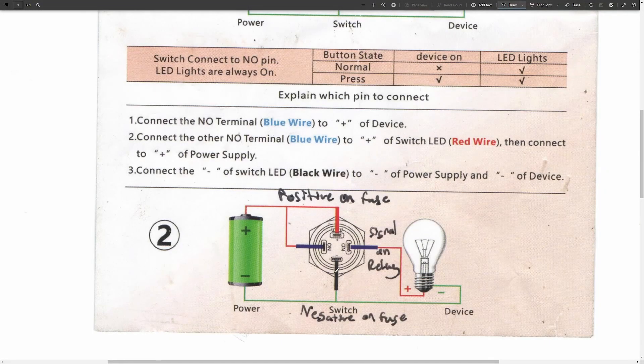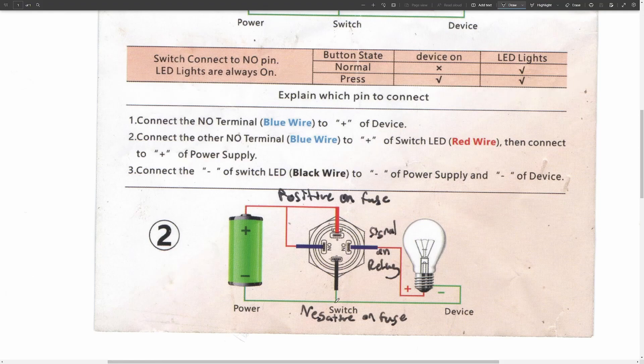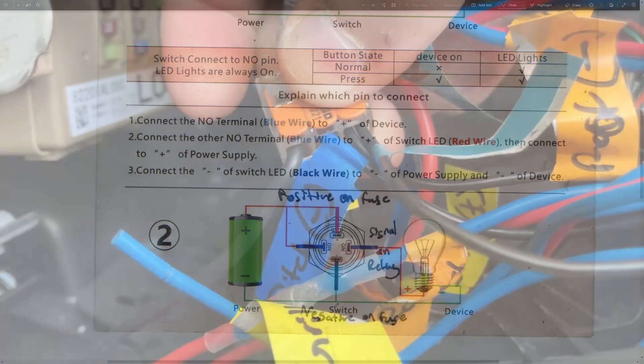And then your negative is going to go back on a body ground or back on the fuse panel.